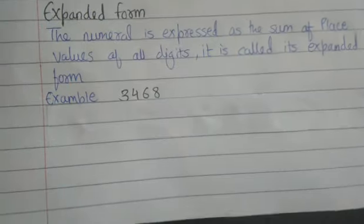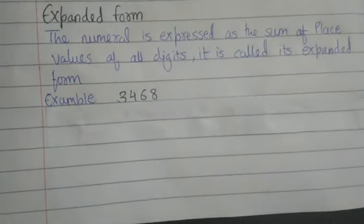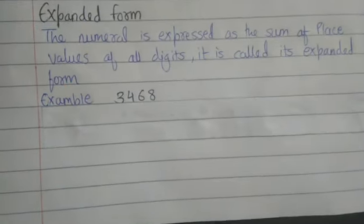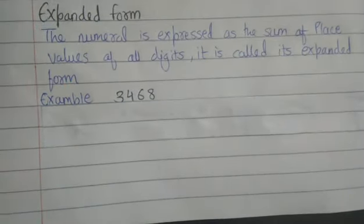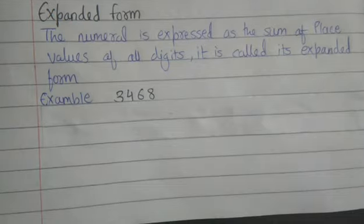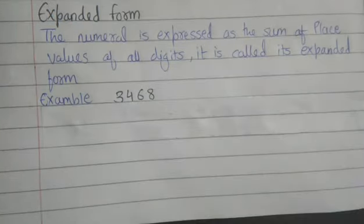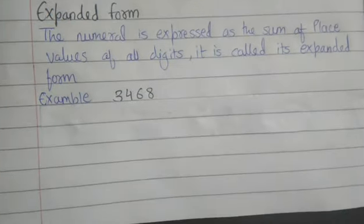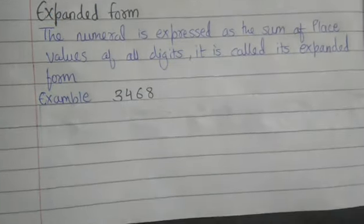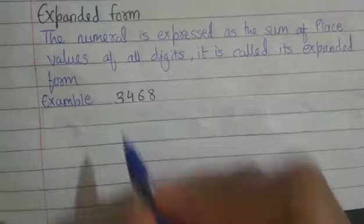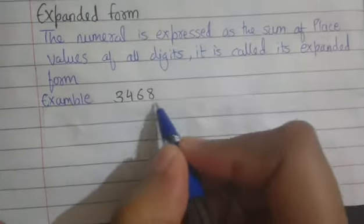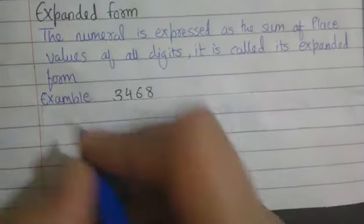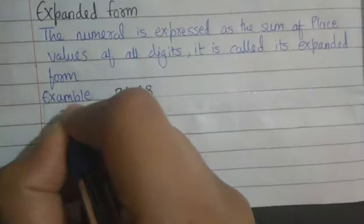Now let us learn expanded form. When a number is expressed as the sum of place values of its digits, it is called its expanded form. Let us write 3468 in expanded form.